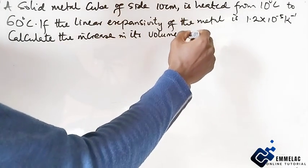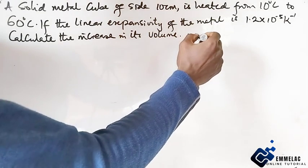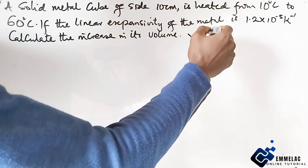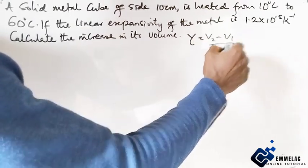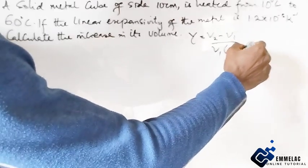Now we know that for volume, the cubic expansivity is given as the increase in volume, or change in volume, which can be V2 minus V1 over V1, then change in temperature theta 2 minus theta 1.